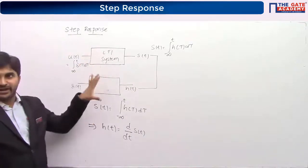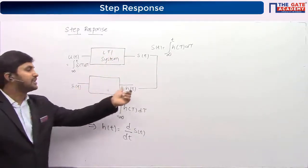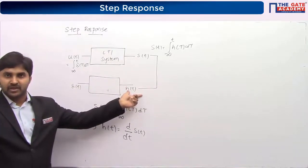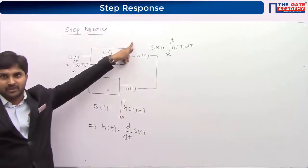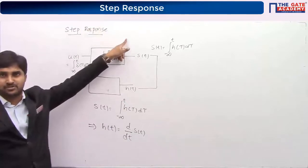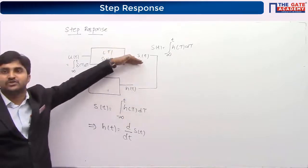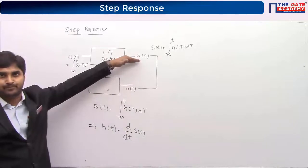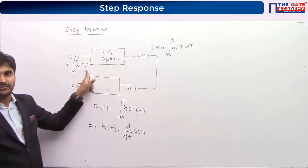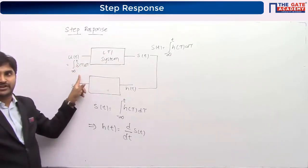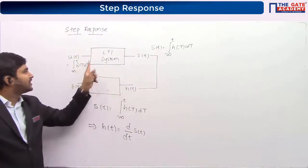Here we are considering an LTI system. When you apply the input as δ(t), the response is the impulse response h(t). When you apply u(t), the response is the step response s(t). Now, u(t) can be written as the integration of δ(t), which establishes the relation between h(t) and s(t).